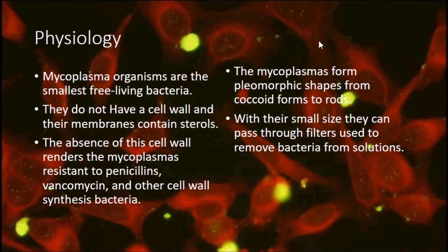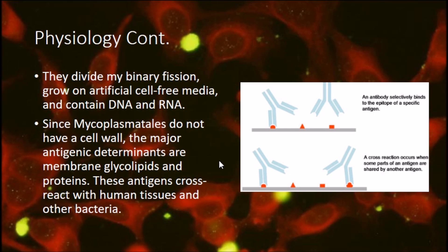Mycoplasmas form polymorphic shapes from coccoid forms to rods, and with their small size they can pass through filters used to remove bacteria from solution. They divide by binary fission, can grow in artificial cell-free media, and contain both DNA and RNA.